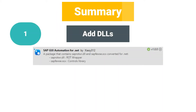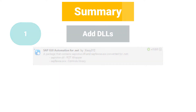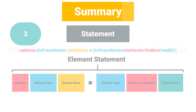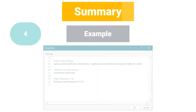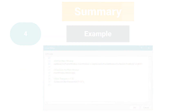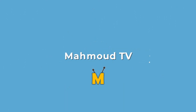At the end of the video, I will briefly summarize what we learned. We imported the DLLs that we need for SAP scripting. After that, I wrote the code to connect to SAP. Then I showed you what a statement looks like. At the end, I had an example to maximize the main window and start transaction F32. I hope you enjoyed the video and learned something interesting from it. See you in the next video.